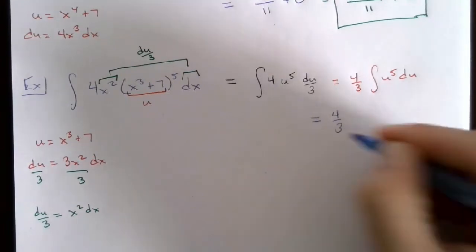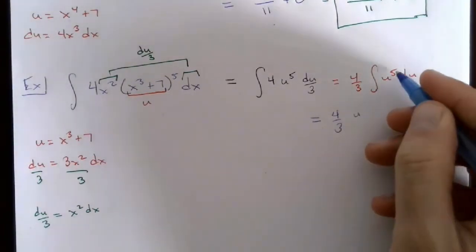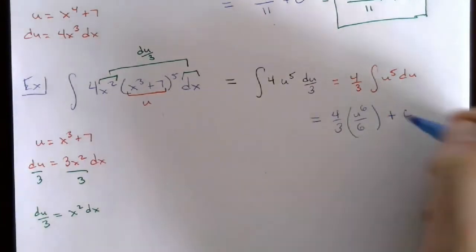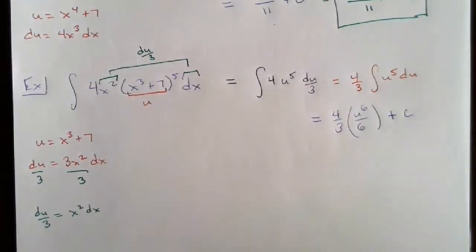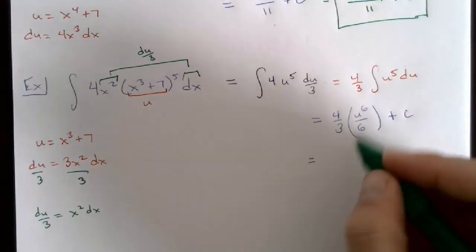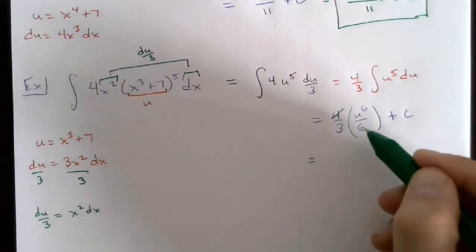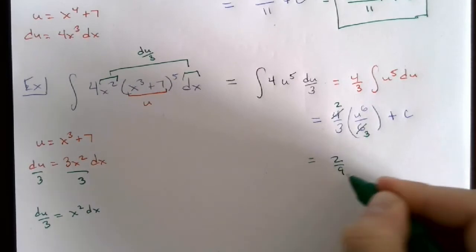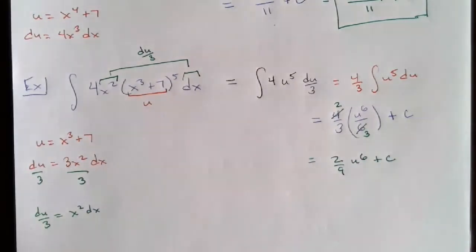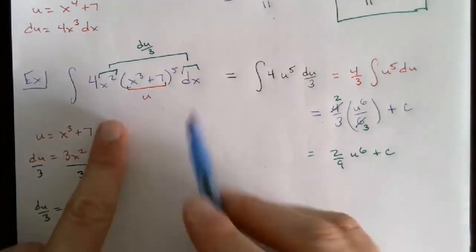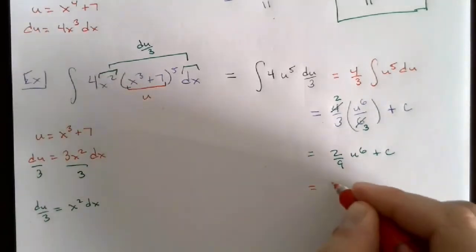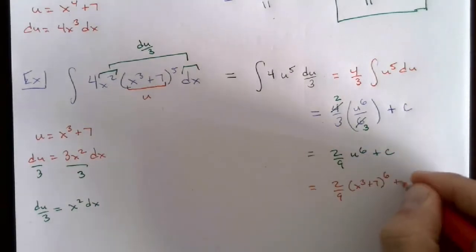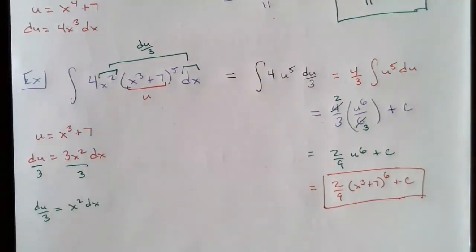Taking the anti-derivative: (4/3) · u^6/6 + C. Simplifying: 4 and 6 share a factor of 2, giving (2/3) · u^6/3 = (2/9)u^6 + C. Back-substituting u = x³ + 7: the answer is (2/9)(x³ + 7)^6 + C. That's the anti-derivative using u-substitution.